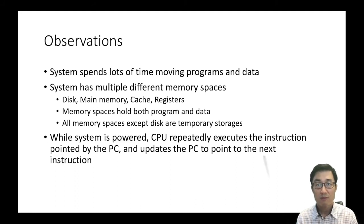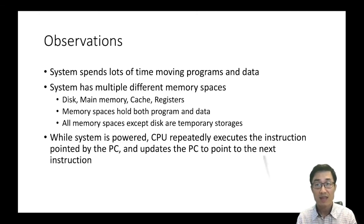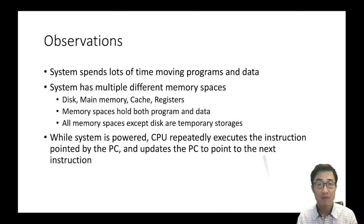Here we have several important observations. The system spends lots of time moving data and programs. The system has multiple different memory spaces: disk, main memory, cache, and registers. The main memory space holds both programs and data. All memory spaces except disk are temporary storages — data is loaded, used, and overwritten by other data. While the system is powered on, the CPU repeatedly executes the instruction pointed to by the PC and updates the PC to point to the next instruction.